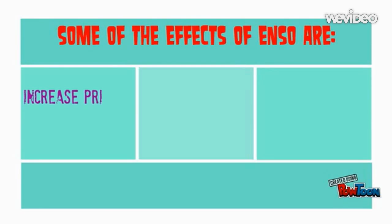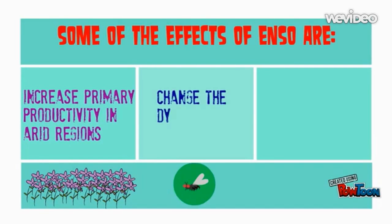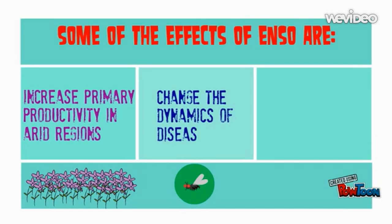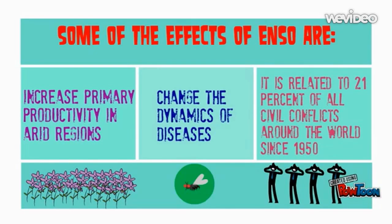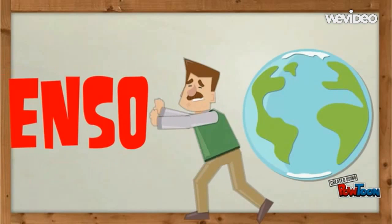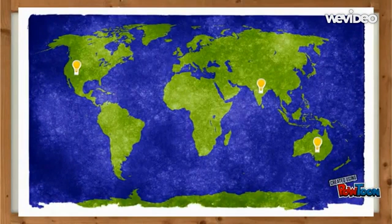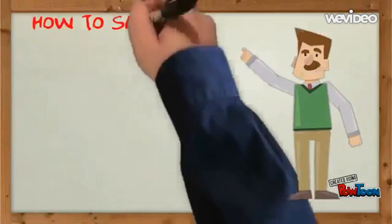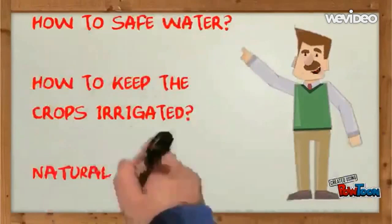This cycle has the power to increase primary productivity in certain regions, change the dynamics of diseases, and it was found to be related to 21% of all civil conflicts around the world since 1950. There is no way in which humans can prevent the ENSO cycle. However, governments around the world can develop plans to respond to climatic anomalies and introduce methods into the education system to protect themselves during adverse weather conditions.